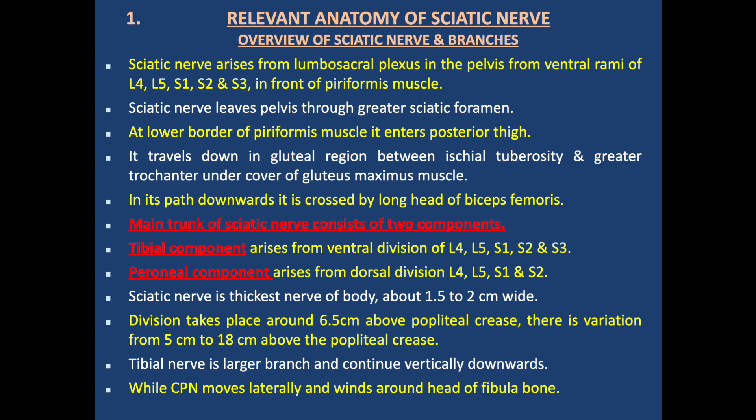The main trunk of the sciatic nerve consists of two components. The tibial component arises from the ventral division of L4, L5, S1, S2, and S3. The sciatic nerve is the thickest and longest nerve of the body, about 1.5 cm to 2 cm wide. The division into terminal branches — the tibial and common peroneal nerve — takes place around 6.5 cm above the popliteal crease, with wide variation from 5 cm to 18 cm above. The tibial nerve is the largest branch and continues vertically downward, while the common peroneal nerve moves laterally and winds around the head of the fibula.